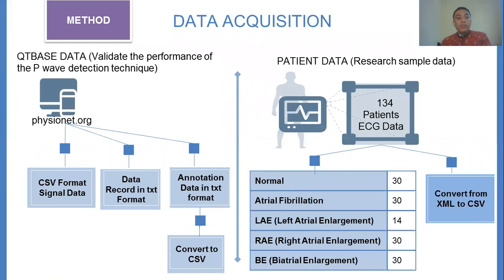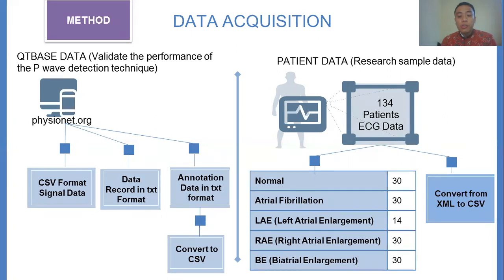Data acquisition: There are two datasets used, namely research sample data and validation data. The QT database (QTDB) can be obtained from physionet.org. The sample data comes from 164 patients.